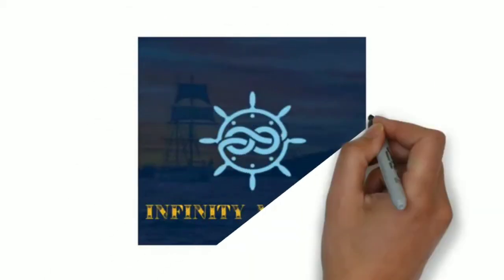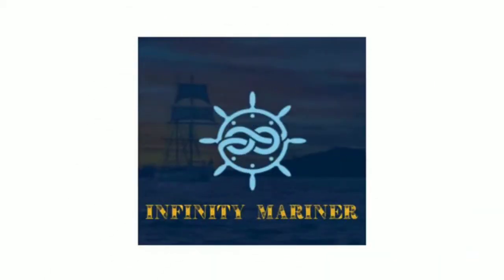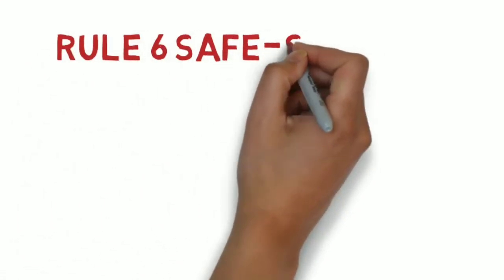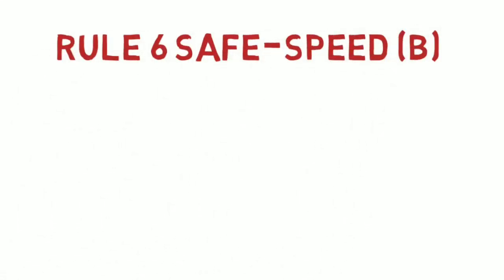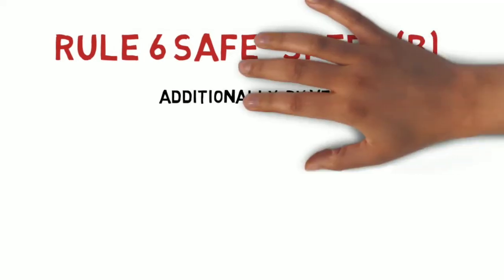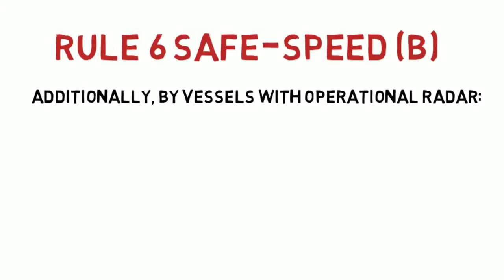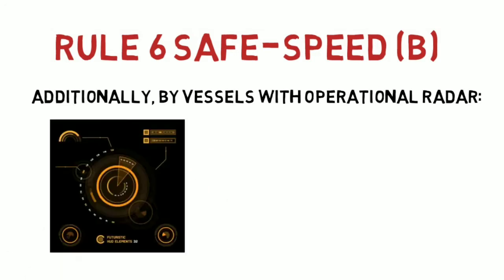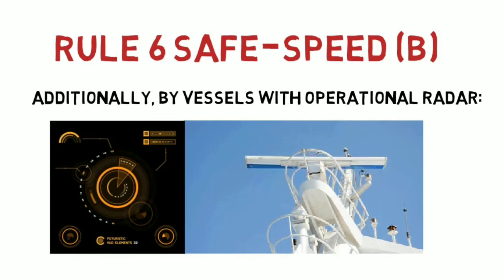Hello folks and welcome back to your own channel Infinity Mariner. Today we are going to discuss Rule Number 6, that is safe speed, part B. Part B talks about vessels with operational radar, and as you can see the radar fitted on the vessel.